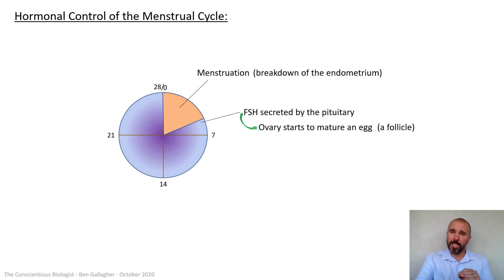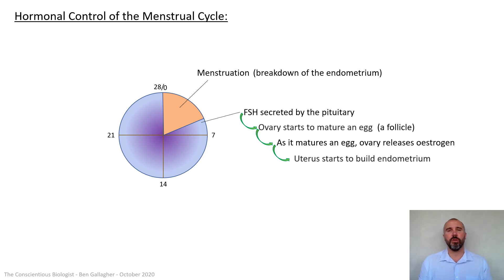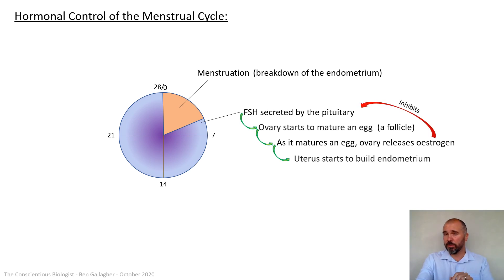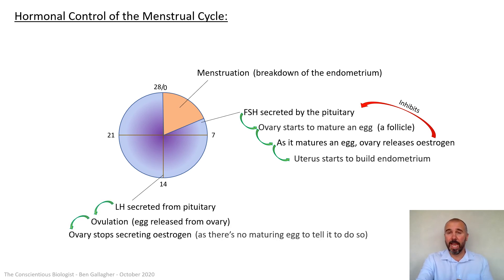That maturing egg within the ovary triggers the ovary to release estrogen. Estrogen tells the uterus to start to build up the endometrium, so these two vital things — the egg maturing and the endometrium building — are happening during the first half of the menstrual cycle up to day 14. Very importantly, estrogen has a secondary function: it inhibits FSH production, so FSH doesn't get secreted by the pituitary once estrogen has been released. LH is then secreted from the pituitary at day 14, causing ovulation — the egg release from the ovary.